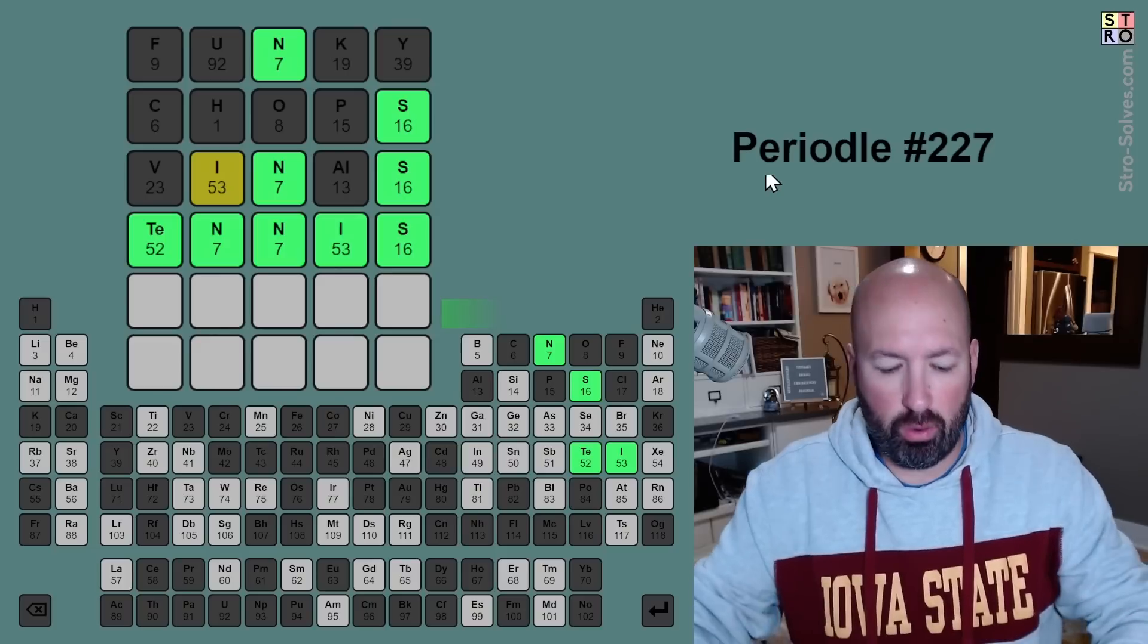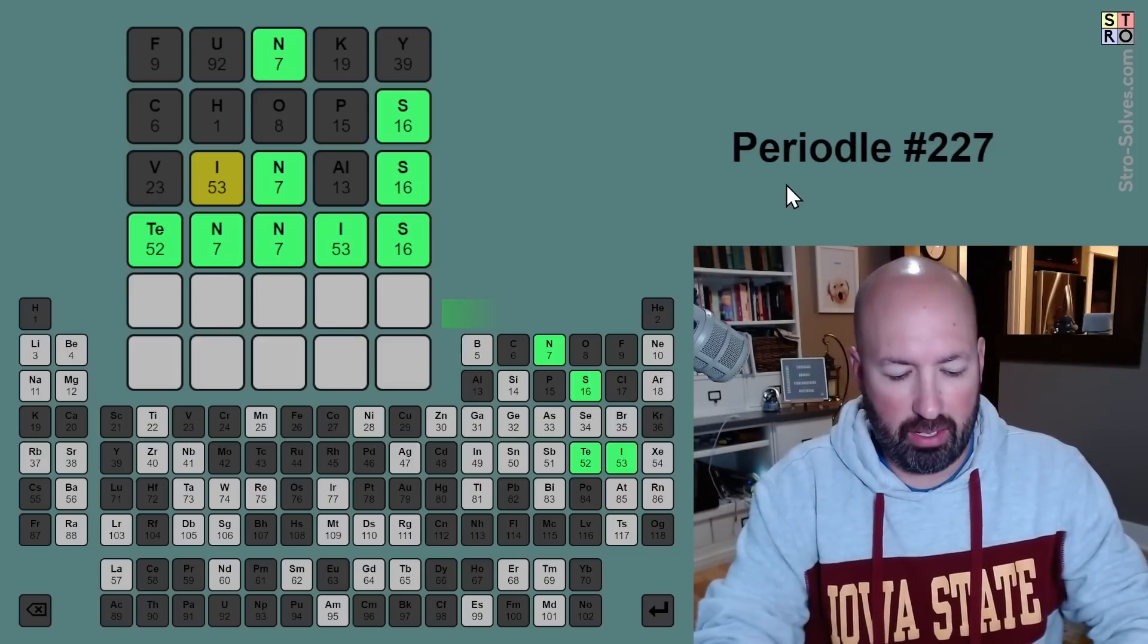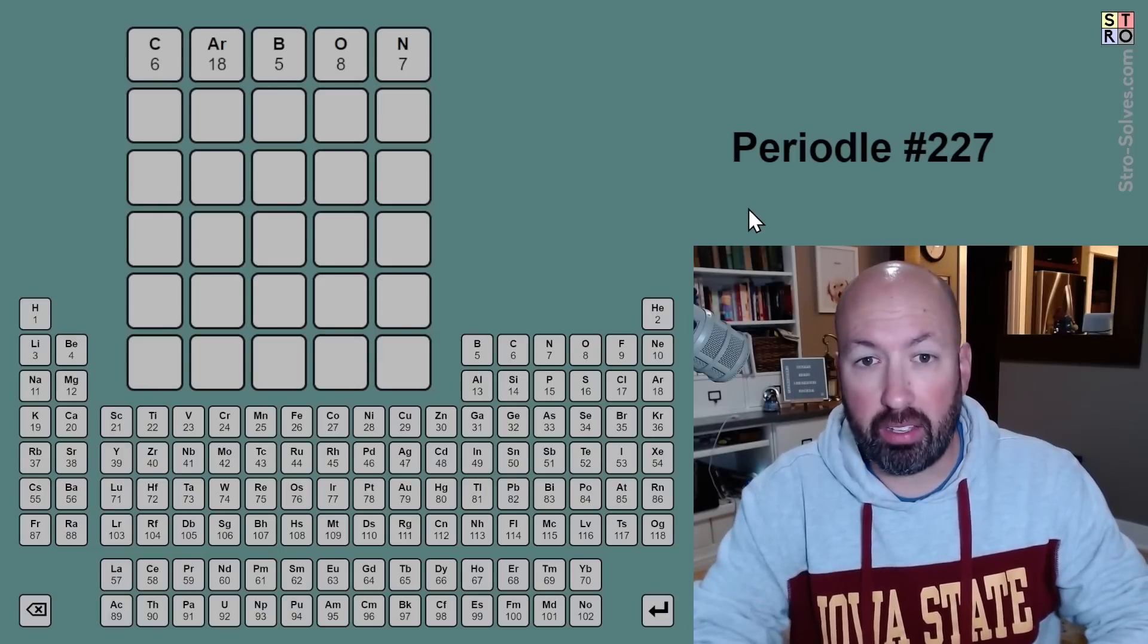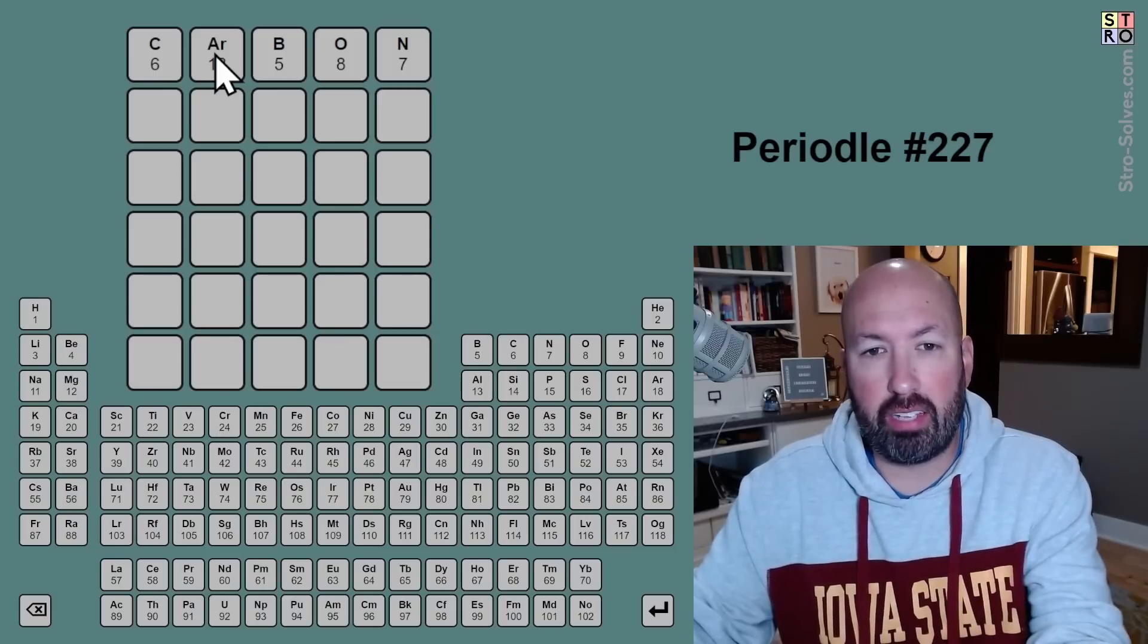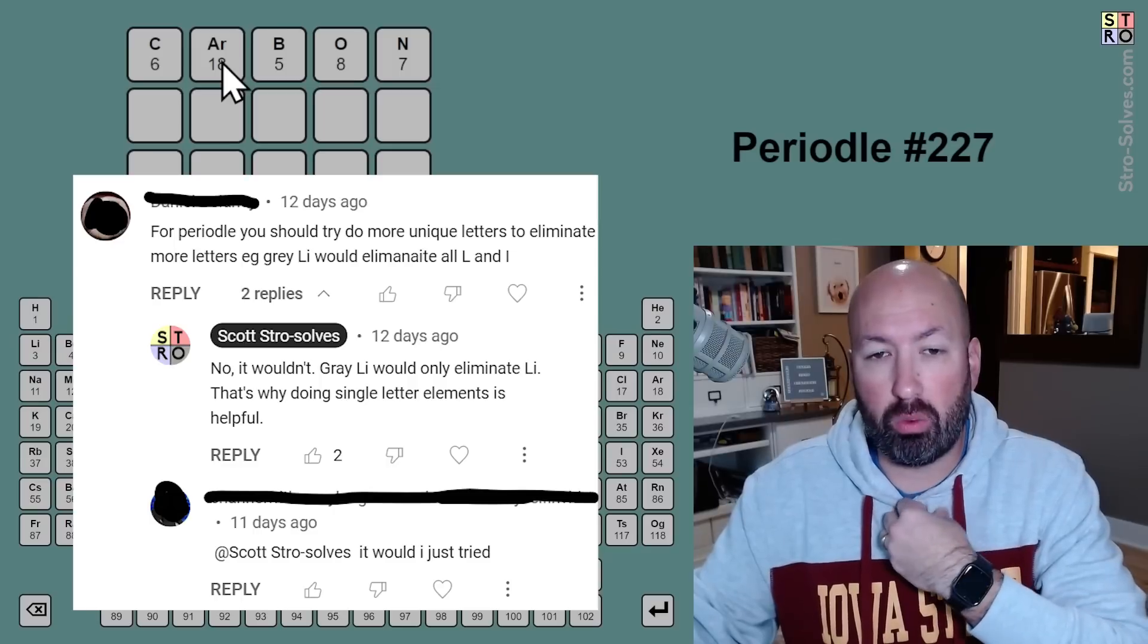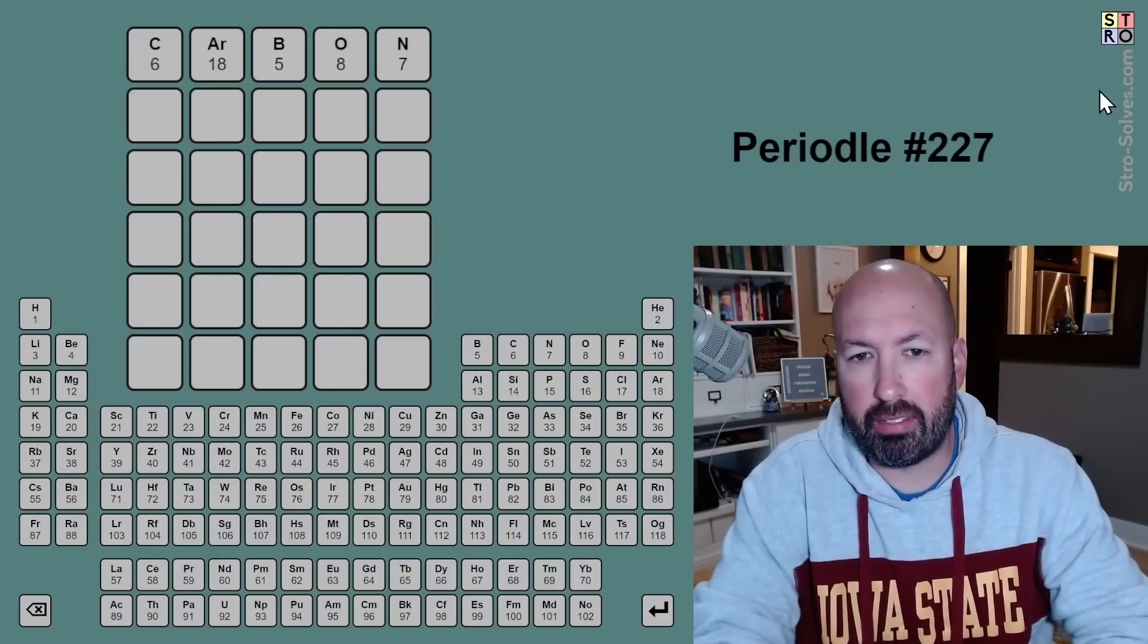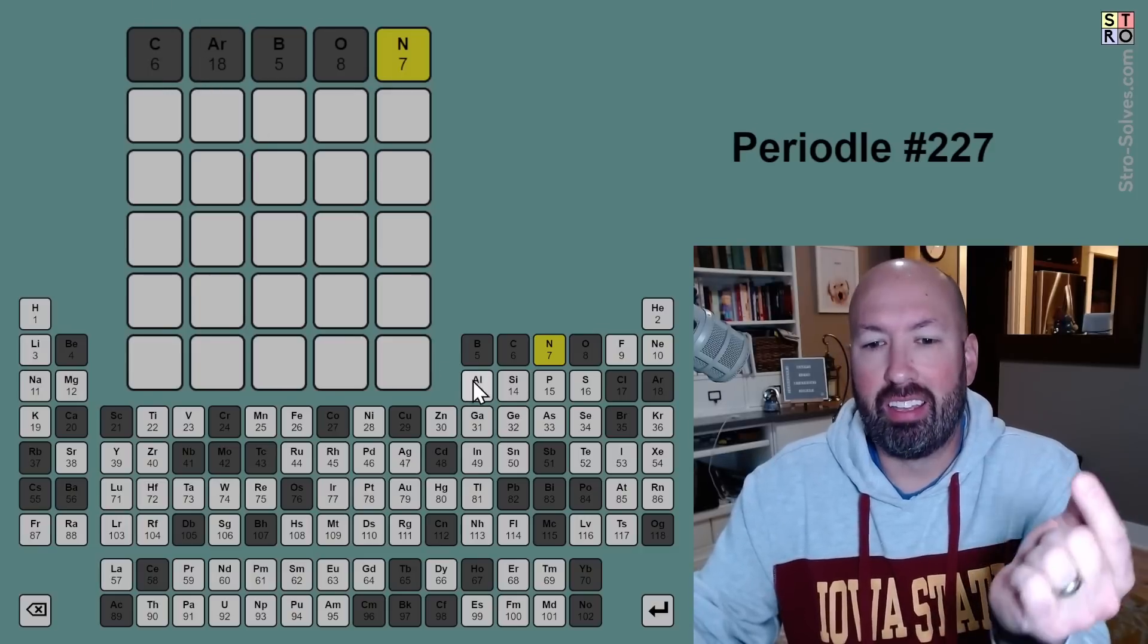So I think, real quick, I want to try something because there was a disagreement in the comments. So I'm actually going to open the same puzzle up in a different window so I can get a fresh puzzle. And since we know the answer, I want to guess carbon because AR is not in tennis, right? The letter A and the letter R are not in tennis. And someone was disagreeing on whether... So we will get a gray AR. Now, the way I understand the rules, that will not eliminate all the elements with A and all the elements with R. It will only eliminate the letters AR next to each other. So I want to try it and see. Yes. Okay.